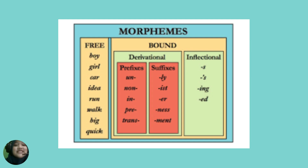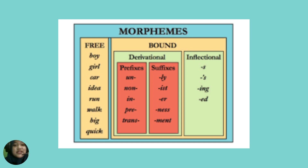Morpheme ini menjadi dua: yang pertama adalah Derivational. Derivational ini adalah penambahan Prefix atau Suffix. Prefix seperti an, non, it, free, trans; and suffix: -ly, -is, -er, and so on.